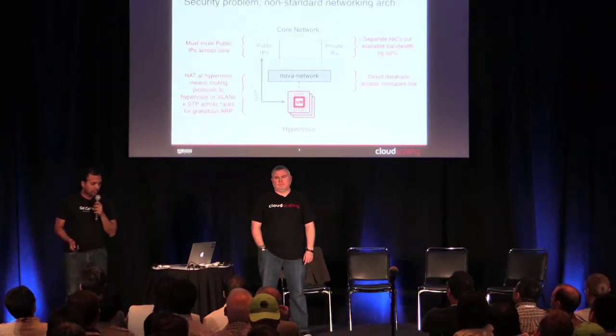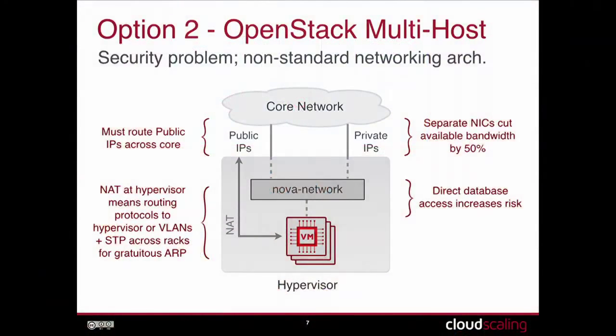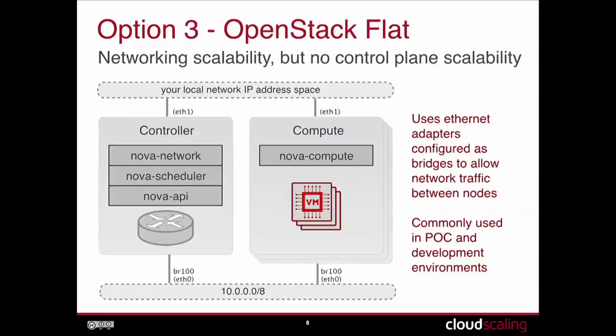The second mode is multi-host mode, in which the network manager runs on the compute nodes and is distributed throughout the whole network. The problem is the network manager is responsible for providing NAT services, so NAT has to come down to the compute nodes — you don't want to expose your compute nodes to the internet. The third mode is flat networking, where Nova Network is centralized and runs into scaling issues on the network plane.